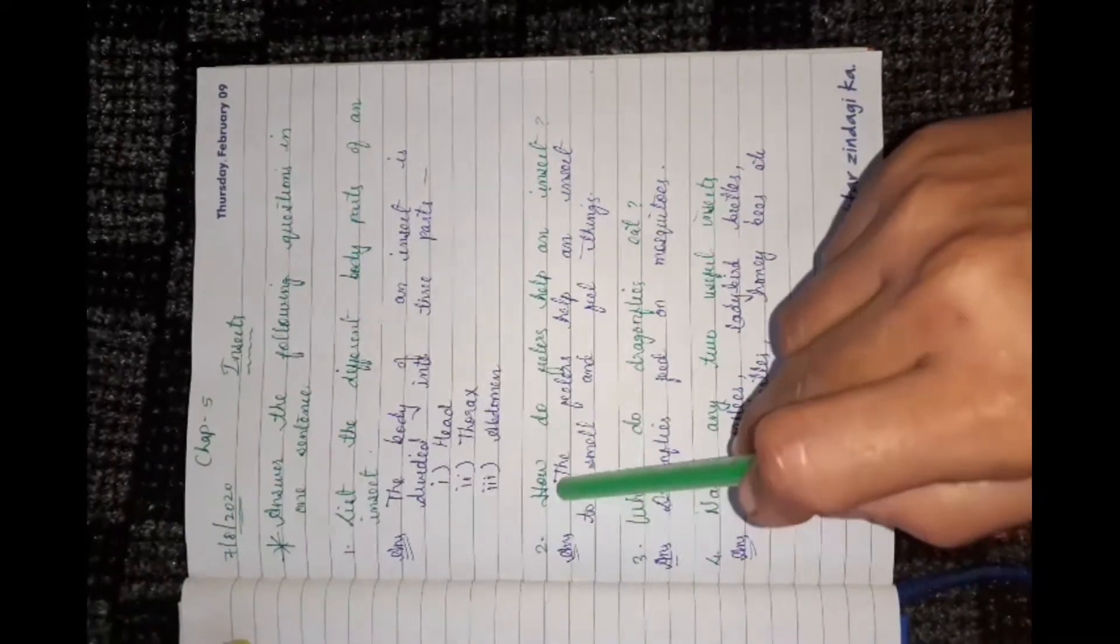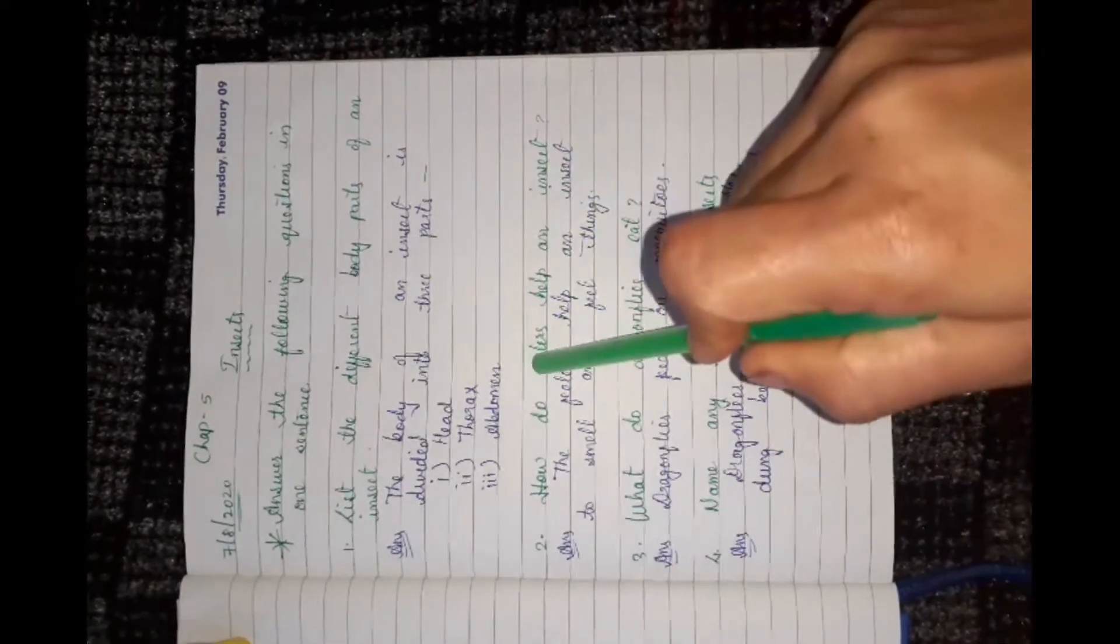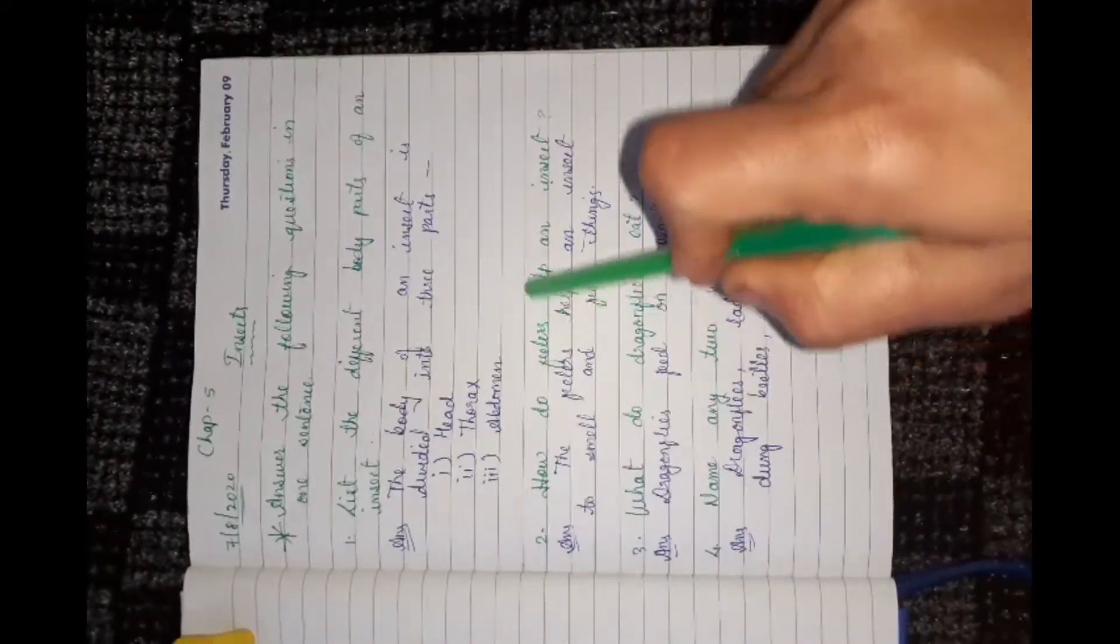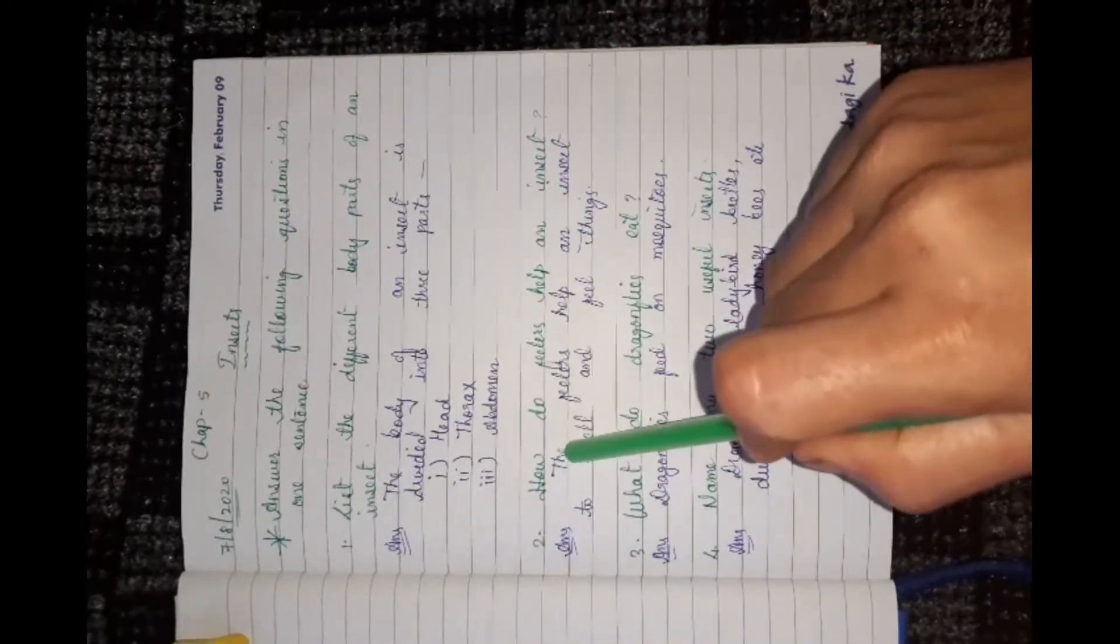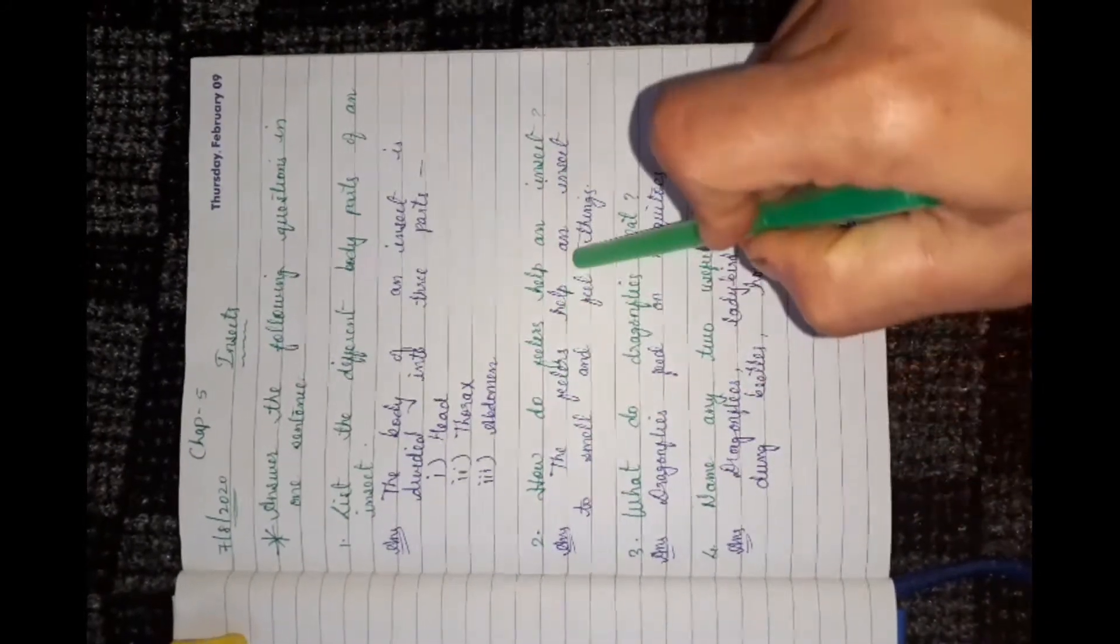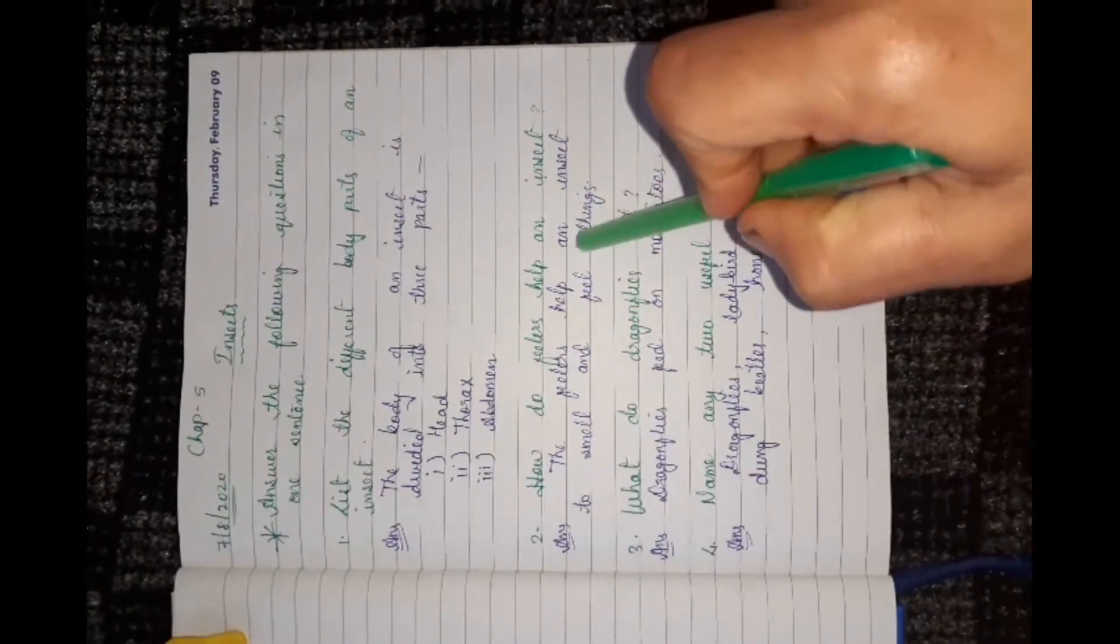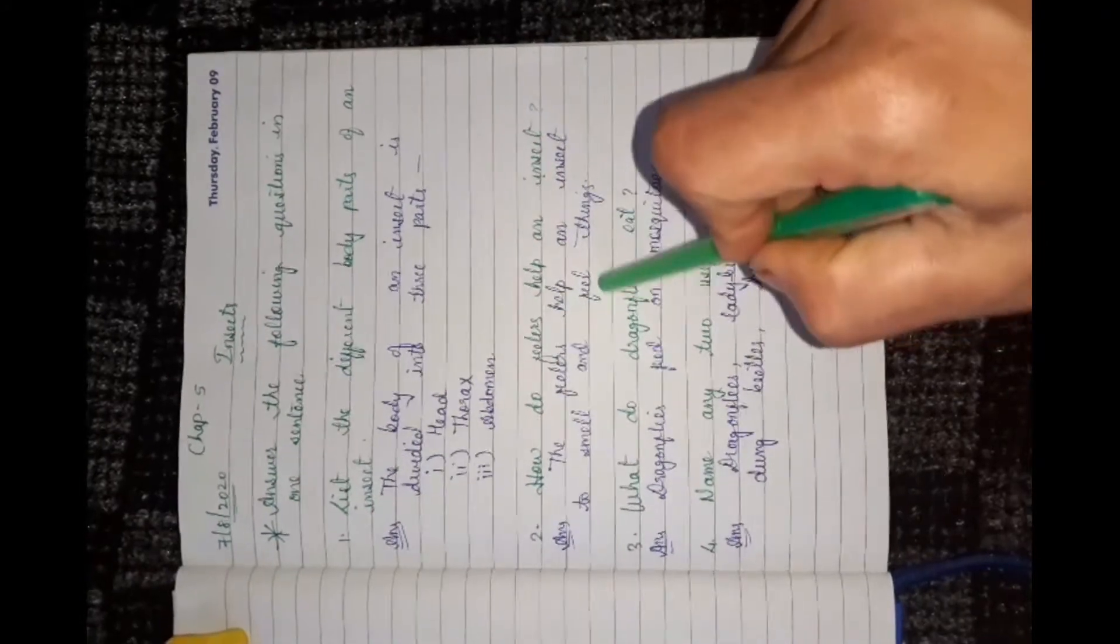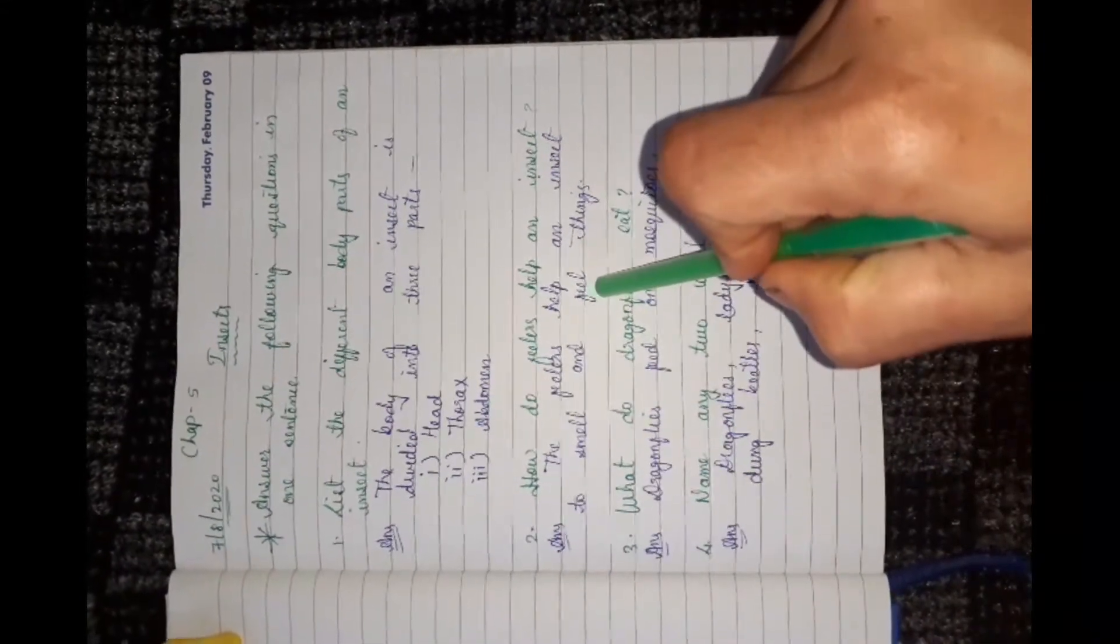Second question, how do feelers help an insect? Feelers ka kya kaam hota hai? Wo kiasa insect ko help karta hai? The answer is, the feelers help an insect to smell and feel the things. Feelers ka matlab feel karna. Wo smell bhi karay ga, feel karne mein bhi help karay ga.